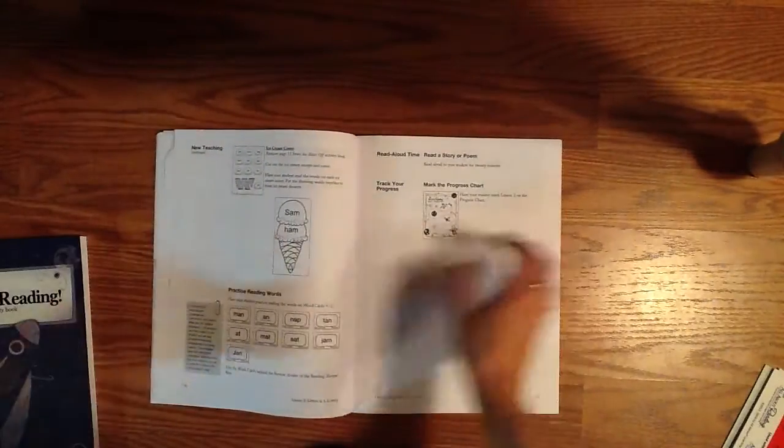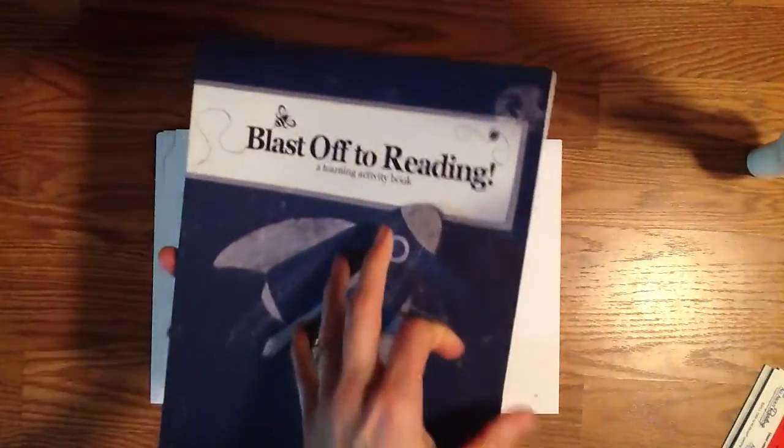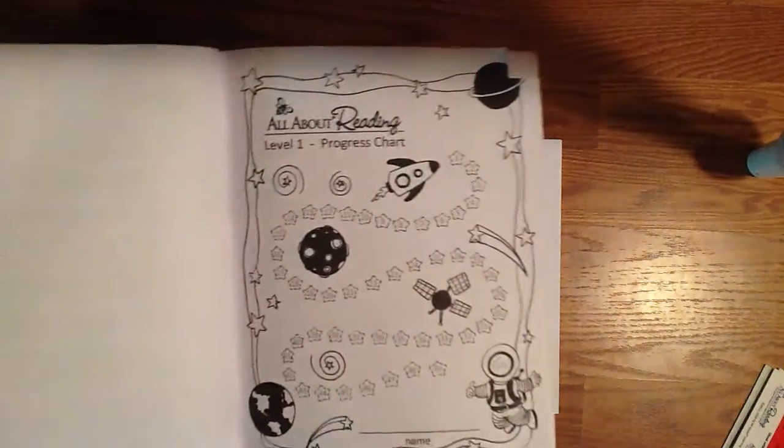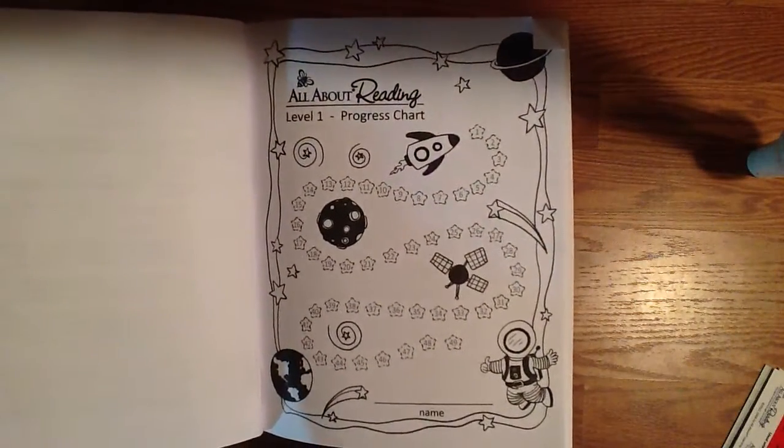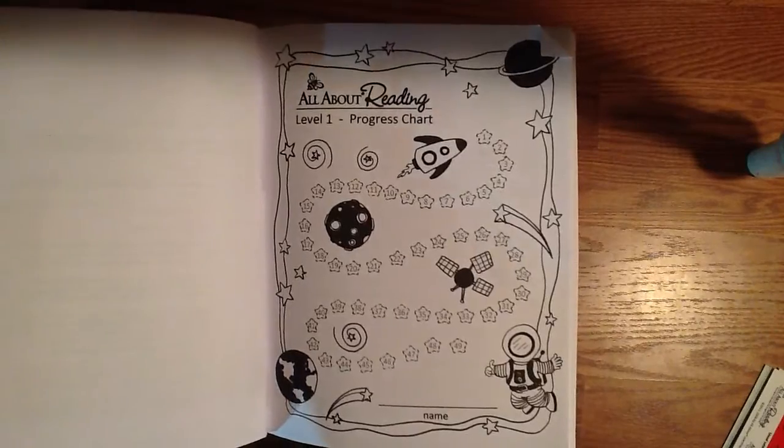You can find the progress chart in the student workbook at the very beginning here. That's a fun way for your child to track their progress. And you'll see within the activity book here, it's going to be a lot of fluency practice,